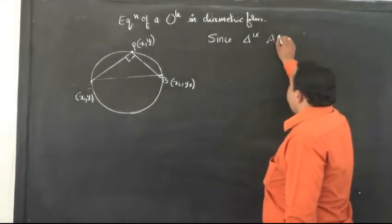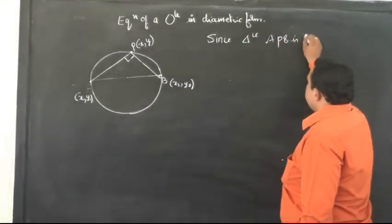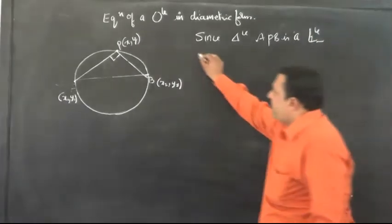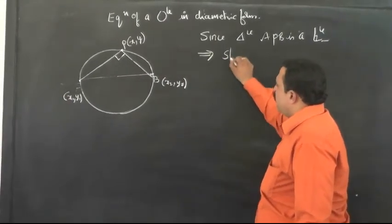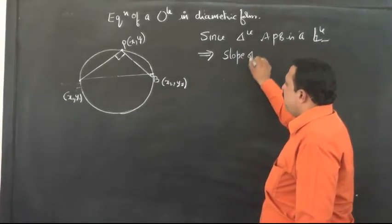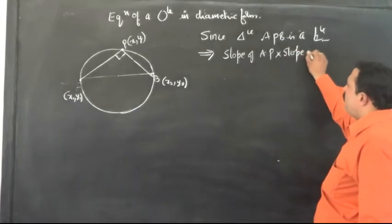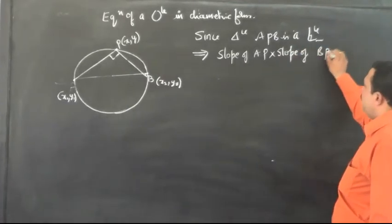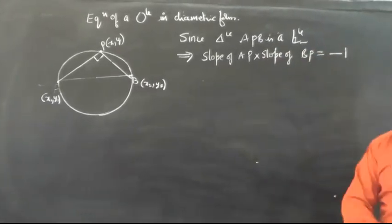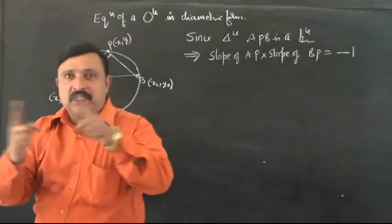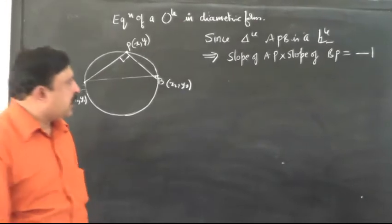Now since triangle APB is a right angle triangle, it implies that the slope of AP multiplied with the slope of BP should be equal to negative unity, that is negative 1. Because if two lines are perpendicular to each other, then the product of their slopes will be equal to minus 1.